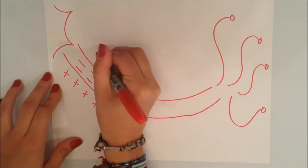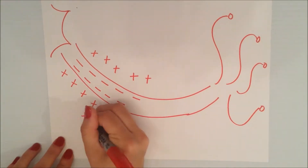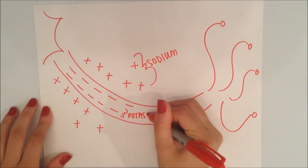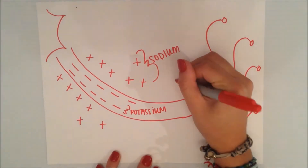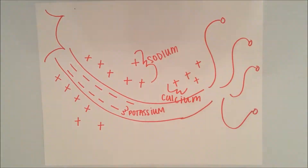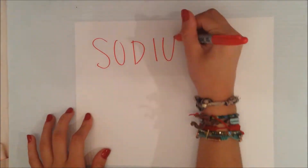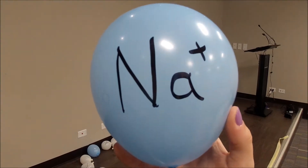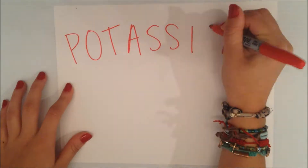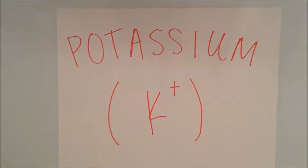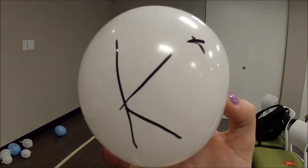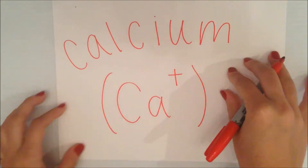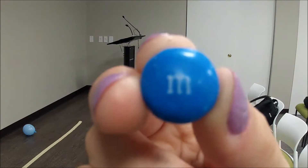The important ions for the action potentials are sodium and potassium, which are both positively charged. Let's add to the picture calcium and ATP, which will come in handy later. The balloons represent the different ions and the M&Ms represent the ATP.